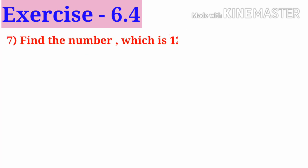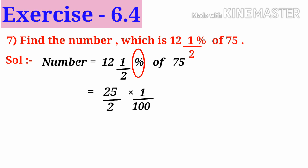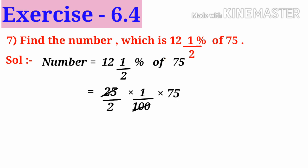Seventh problem: find the number which is 12.5 percent of 75. Solution: the number is equal to 12.5 percent of 75. Converting 12.5 into an improper fraction, 4 times 2 is 8 plus 1 is 25 by 2. Percent means 1 by 100, of means multiply by 75. On simplification by 25, we get 1 by 8 of 75, that is 75 by 8 is the number.